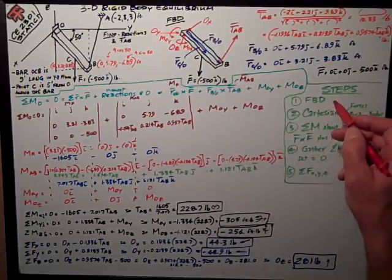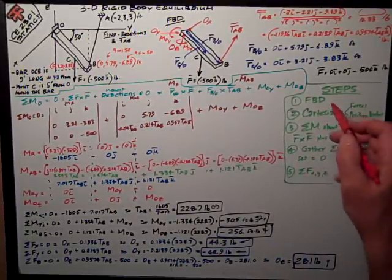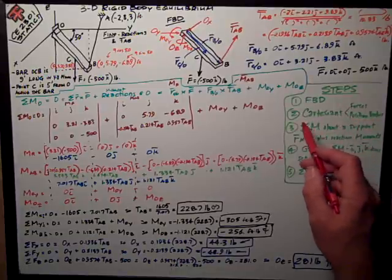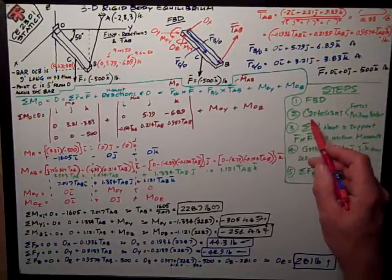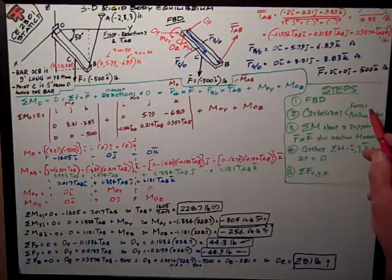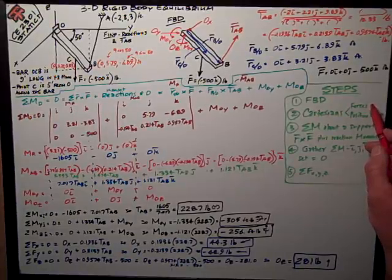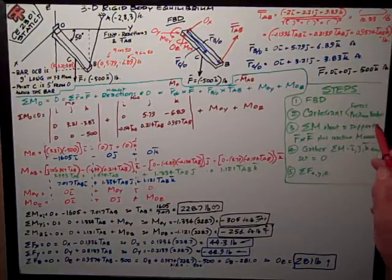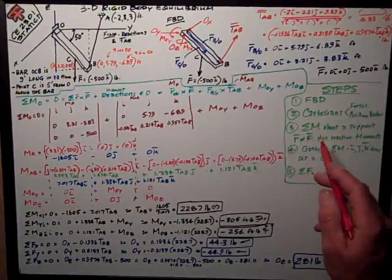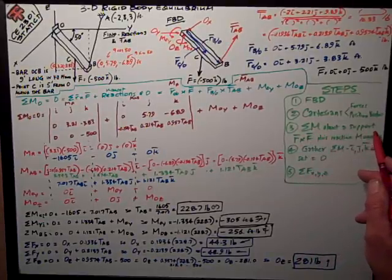Step one, of course, is the all-important free body diagram. In step two, I want to get everything in Cartesian format, my forces both known and unknown, and my position vectors, which I'm going to need for the next step, which is to sum moments about a support.